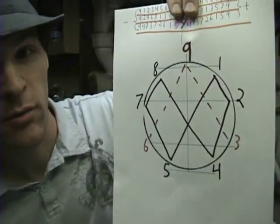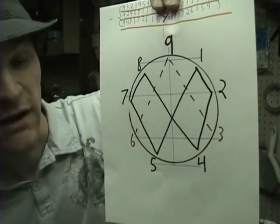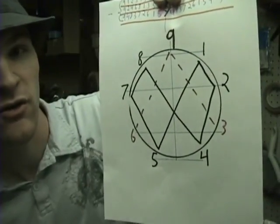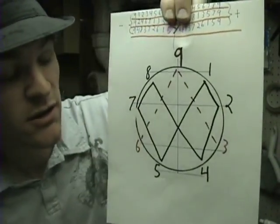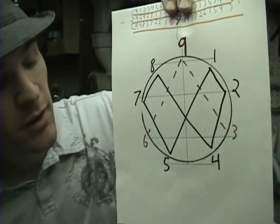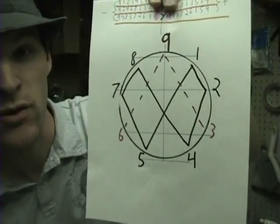Well, you use what they call polar number pairs which would be 8 and 1, 7 and 2, 5 and 4. If you haven't ever done this, if you add up any number that's directly across from each other on this map, they'll all equal 9. So that's interesting.